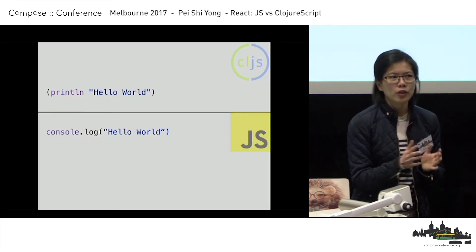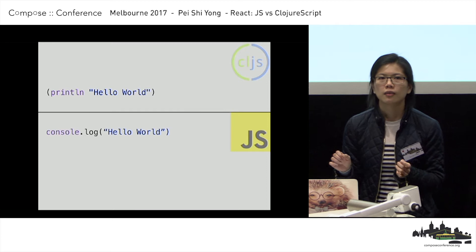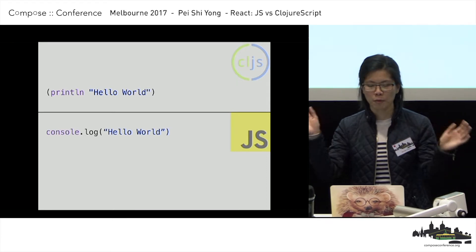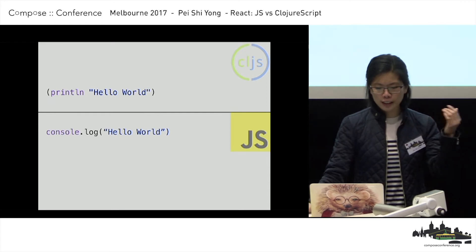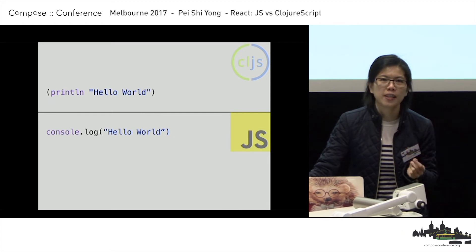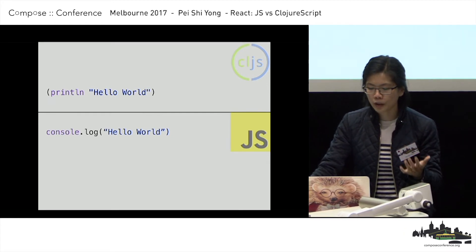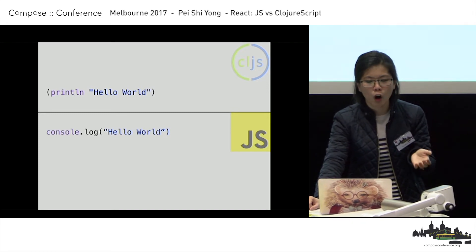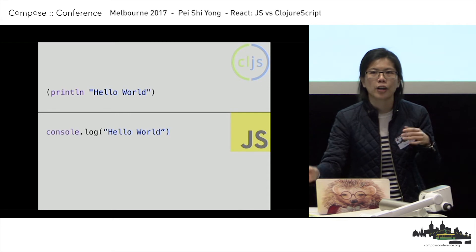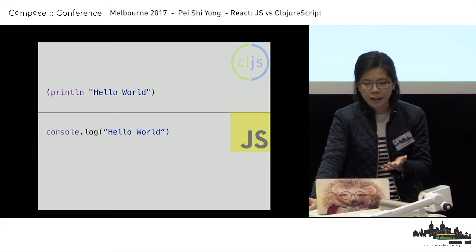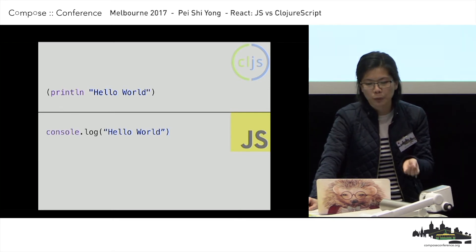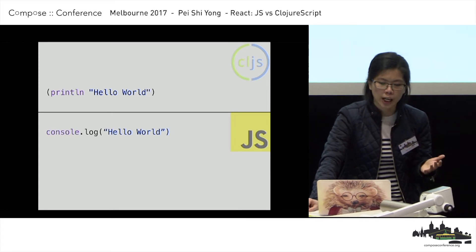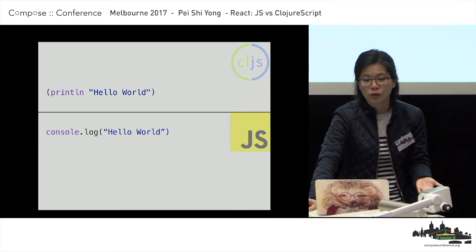How many of you actually know Clojure or ClojureScript? Okay cool. React? Okay, a lot more. We'll go through some simple syntax stuff between ClojureScript and JavaScript. In ClojureScript, you call a function by having parentheses outside. To do a print line, you have the println function and then you give it the argument 'hello world'. In JavaScript, you do console.log.